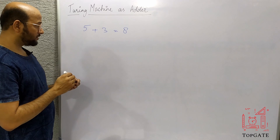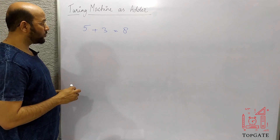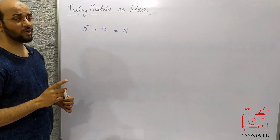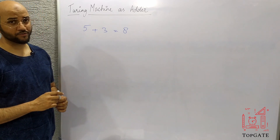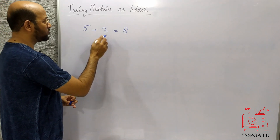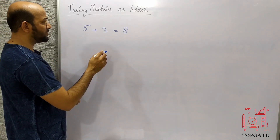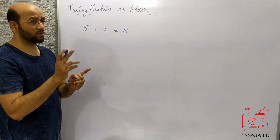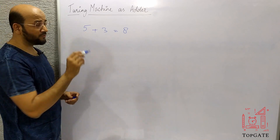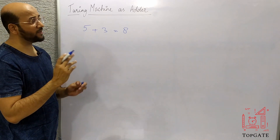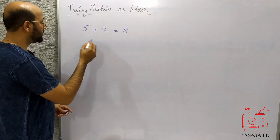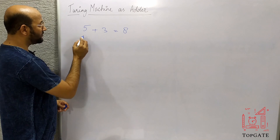This Turing machine has one problem: it does not know how to count things. So the simplest method to add two numbers, when it does not know counting, is to convert the numbers into unary form first and then add them.